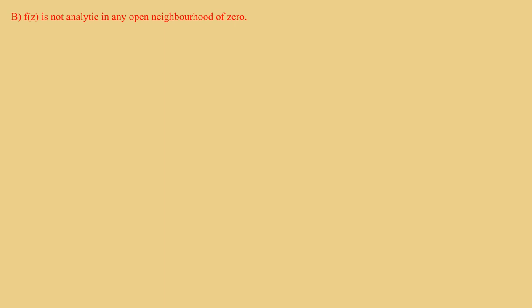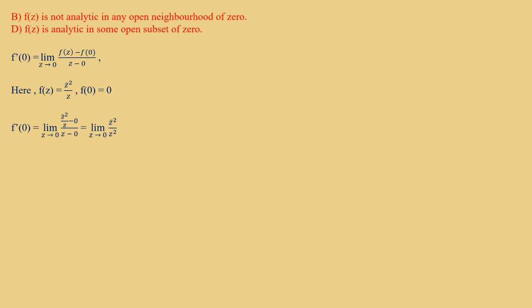Now Options B and D. Option B says F(z) is not analytic in any open neighborhood of 0, and Option D says F(z) is analytic in some open subset of ℂ — these are opposite to each other. To check analyticity, we compute f′(0) = limit as z → 0 of [F(z) − F(0)] / (z − 0). Since F(z) = z̄²/z and F(0) = 0, this becomes the limit as z → 0 of z̄²/z².